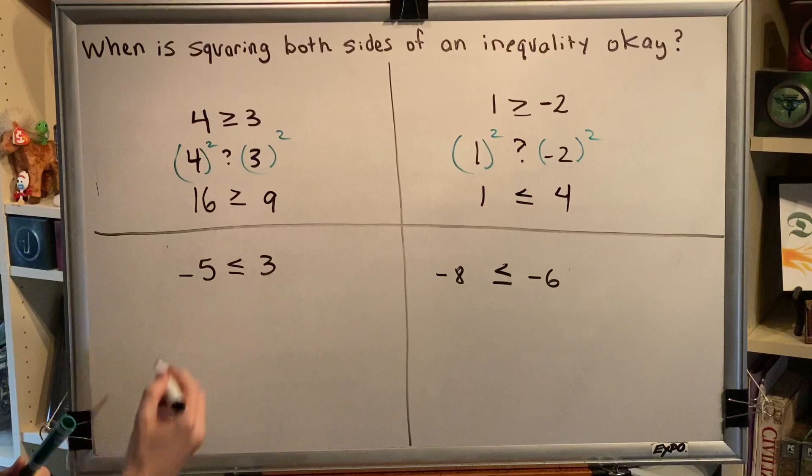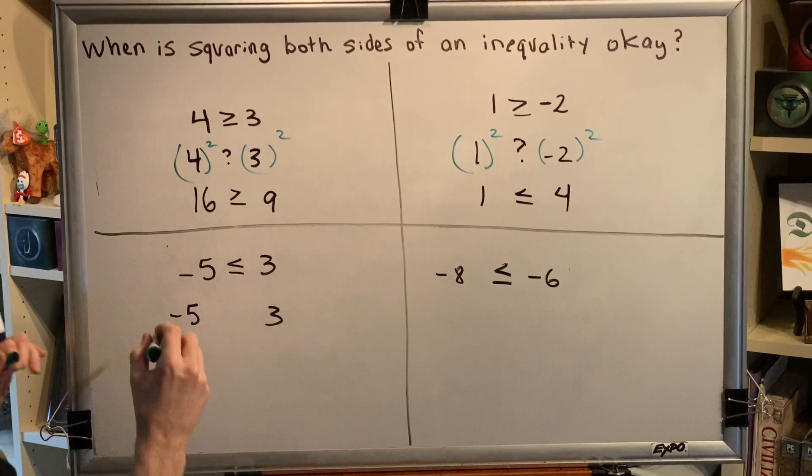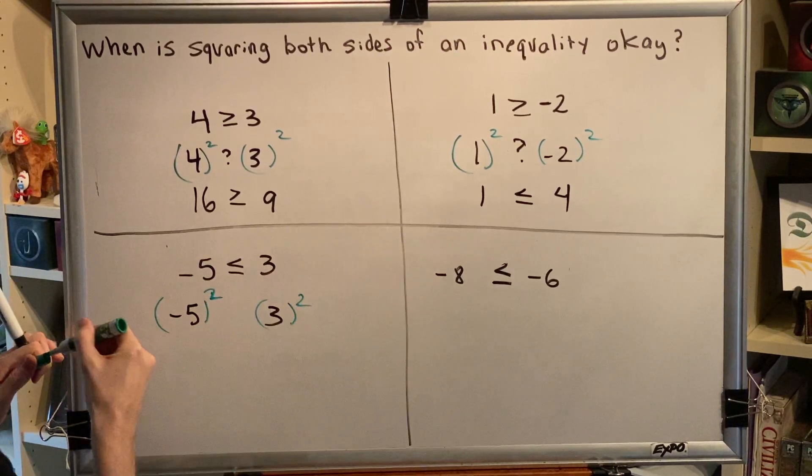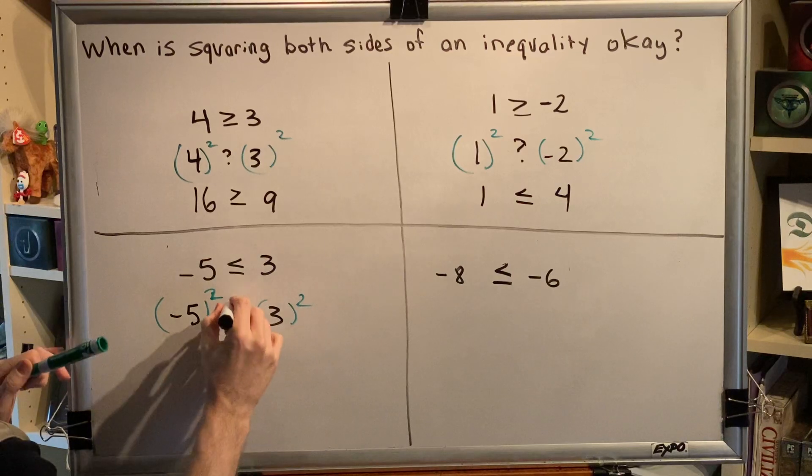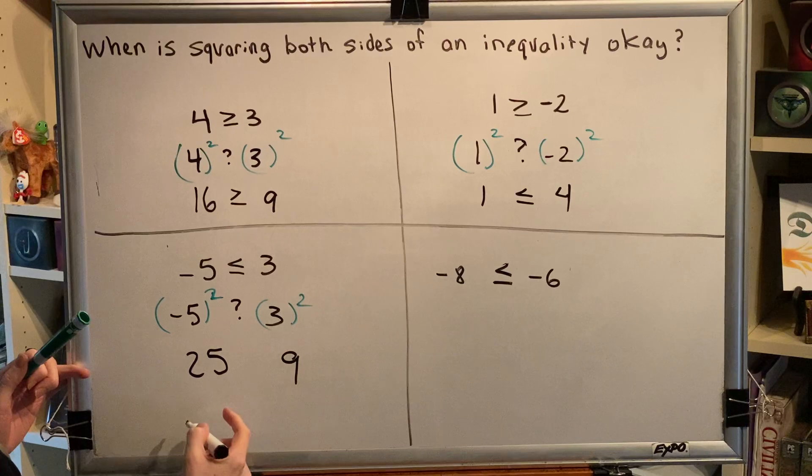Okay, let's look at our next example: negative five on the left and three on the right. Let's square both of these and then we can compare. Negative five squared would be positive 25, three squared would be nine, and that once again flip-flops our sign.